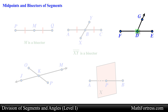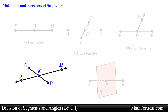In this figure, point D is the midpoint of segment FE. We can conclude that segment FD is congruent to segment DE because point D bisects segment FE. We can also conclude that ray DG bisects segment FE. In the next figure, segment OK is congruent to segment KP, so we can conclude that point K is the midpoint of segment OP and that line JM is a bisector of segment OP since it is collinear with midpoint K.